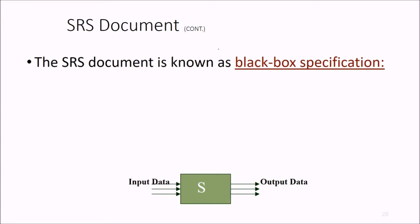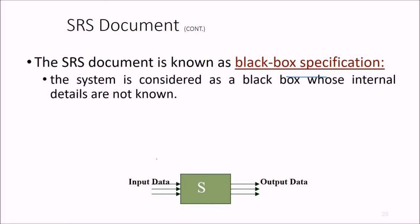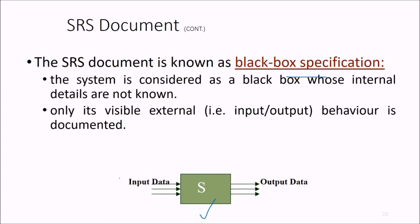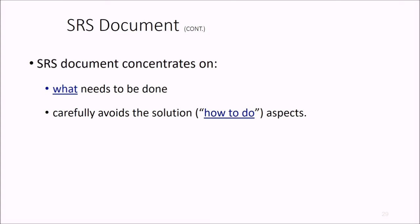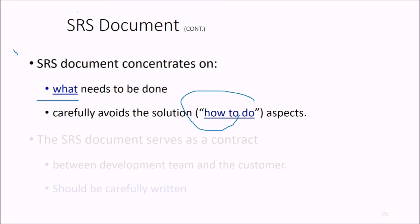So the SRS document is known as black box specification. The system is considered as a black box where you are not aware of internal details right now. Only you have visibility to the external, that means these input data and output data, input and output behavior which is documented. So SRS document concentrates on what needs to be done, and which carefully avoids the solution how to do, because this is going to come in the design aspects.